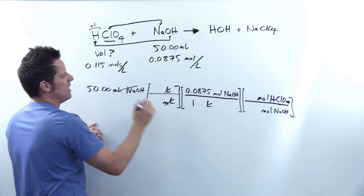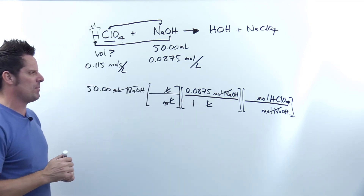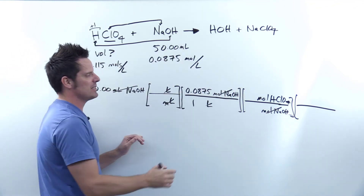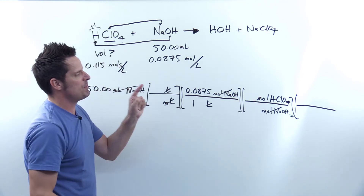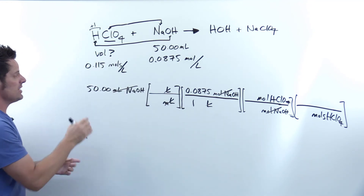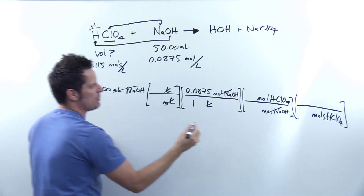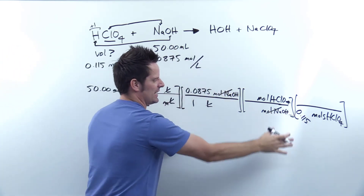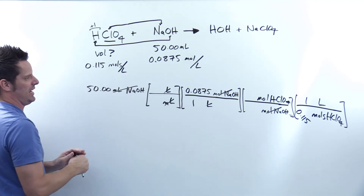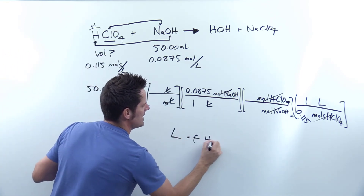The question asks me to get to a volume of HClO₄. I'm currently at moles of HClO₄, so I need another set of parentheses with moles of HClO₄ in the denominator. I have the value 0.115 moles of HClO₄ per liter of solution — that's the molarity. So I put 0.115 in the denominator and 1 liter of HClO₄ solution in the numerator. My moles cancel, leaving me with liters of HClO₄ — my target units.